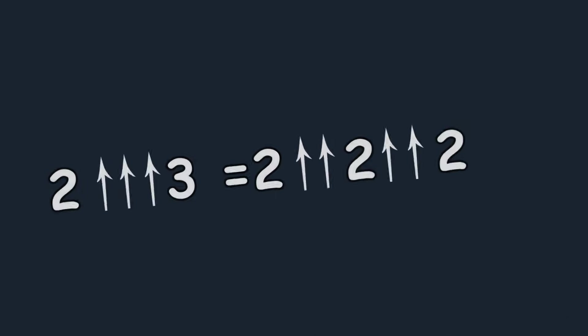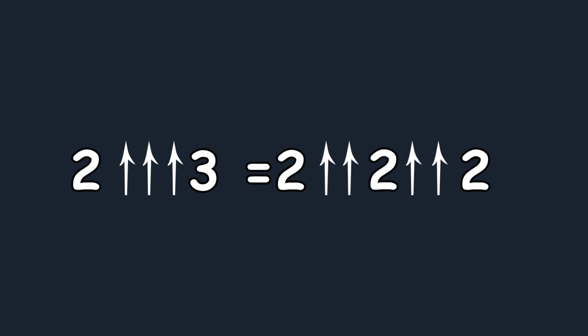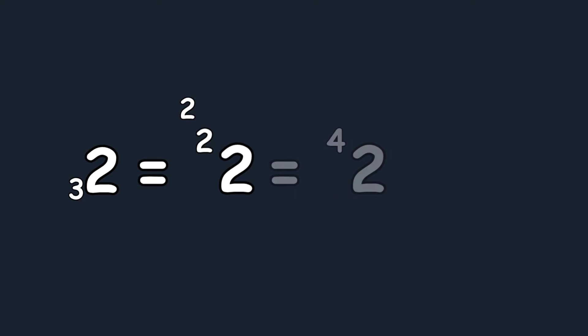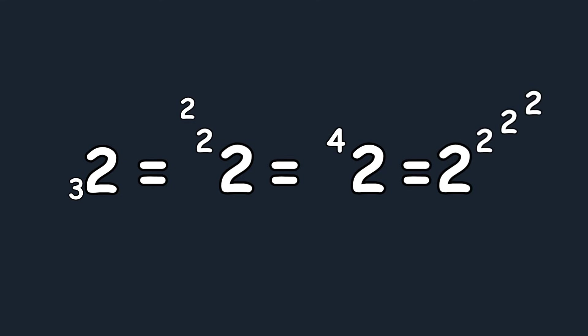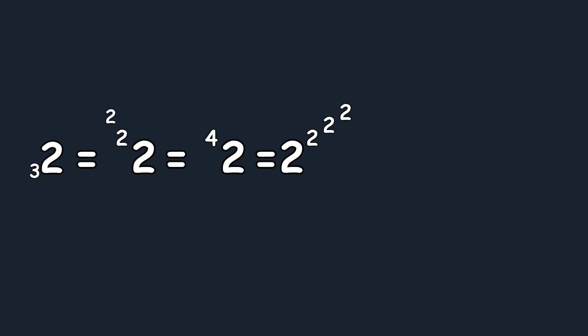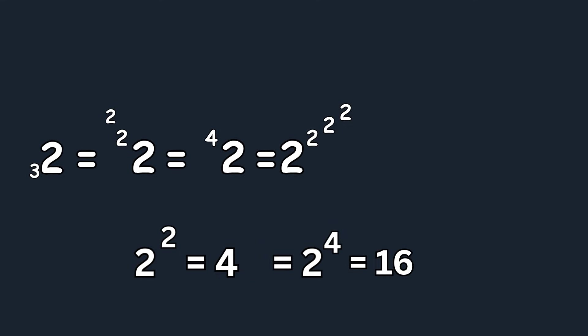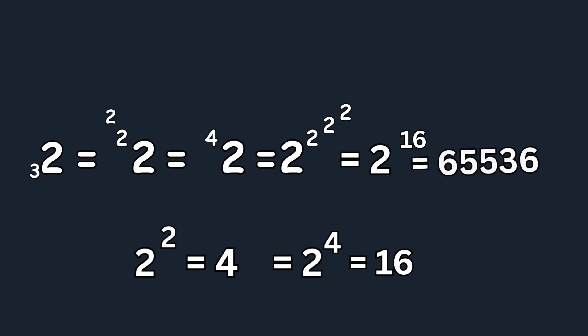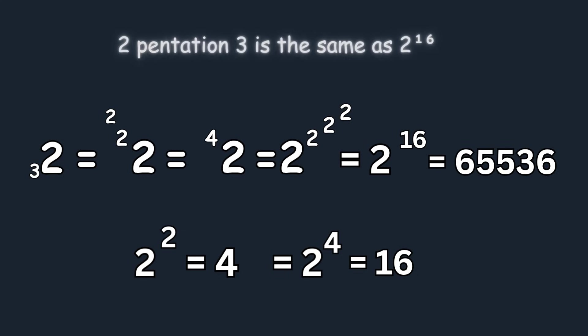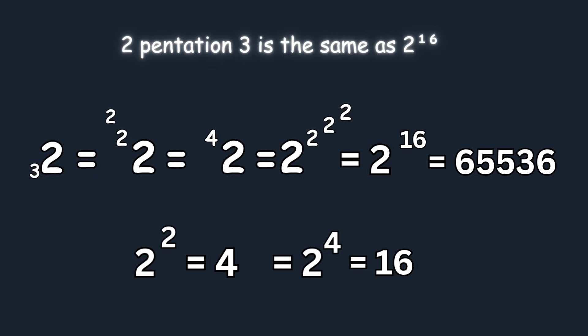The next hyperoperation after tetration is pentation. For example, two pentation three can be written as the repetition of tetration. So two pentation three equals two tetration two tetration two, which equals two tetration four. Which in turn is two to the power of two to the power of two to the power of two. Doing the calculation: two to the power of two equals four, two to the power of four equals sixteen, and two to the power of sixteen equals 65,536. So two pentation three equals two to the power of sixteen.